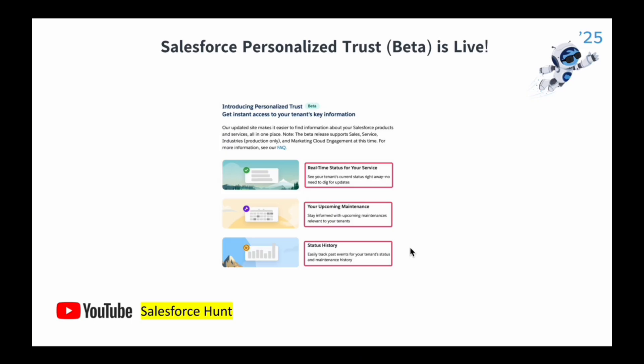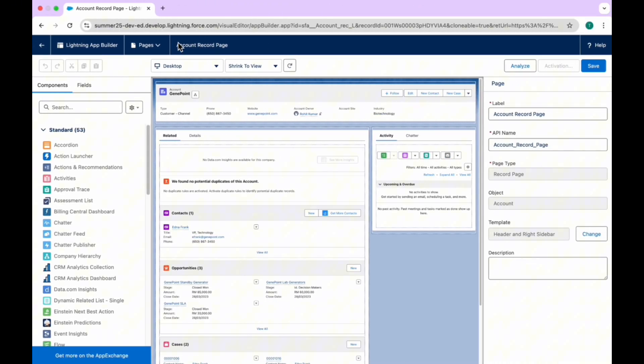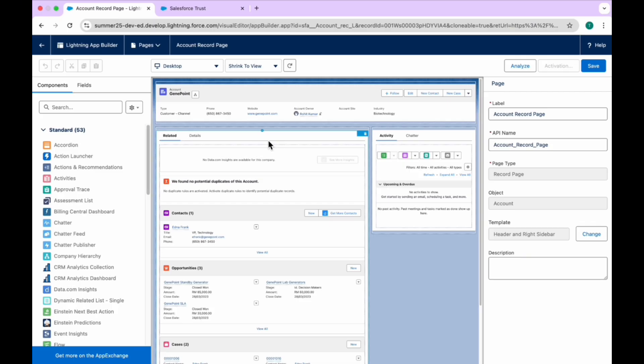The next feature is Salesforce Personalized Trust Beta, which is now live. Previously it was available as status.salesforce.com or trust.salesforce.com to check instance health, maintenance, and due dates. Now, once you go to trust.salesforce.com, you will see a new UI where you can log in using your Trailblazer or Trailhead profile and see personalized instance information.